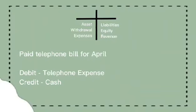Paid telephone bill for April. John Smith paid the telephone bill using cash. That's why the telephone bill is in the debit, because ito ay pumasok sa atin. At ang cash is credit, because we paid it — kaya ito ay lumabas.